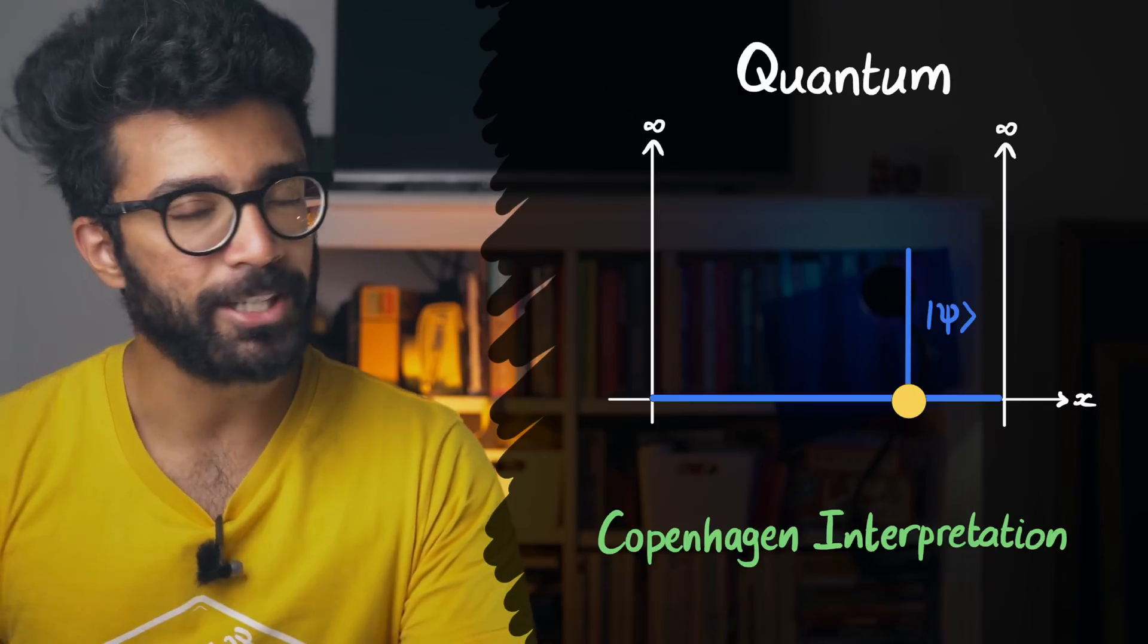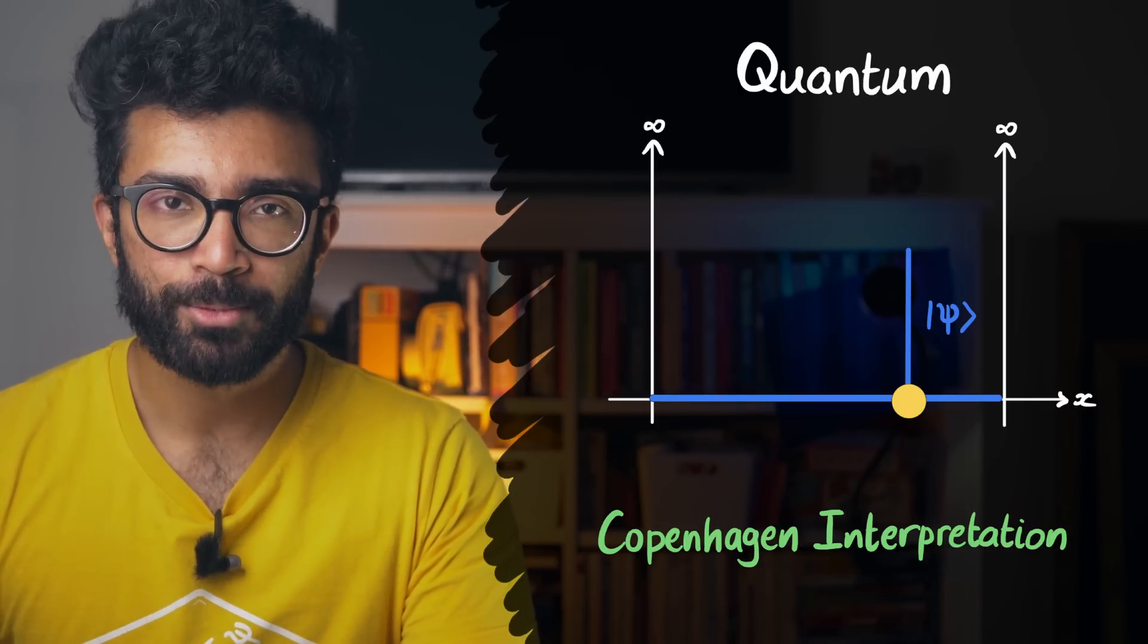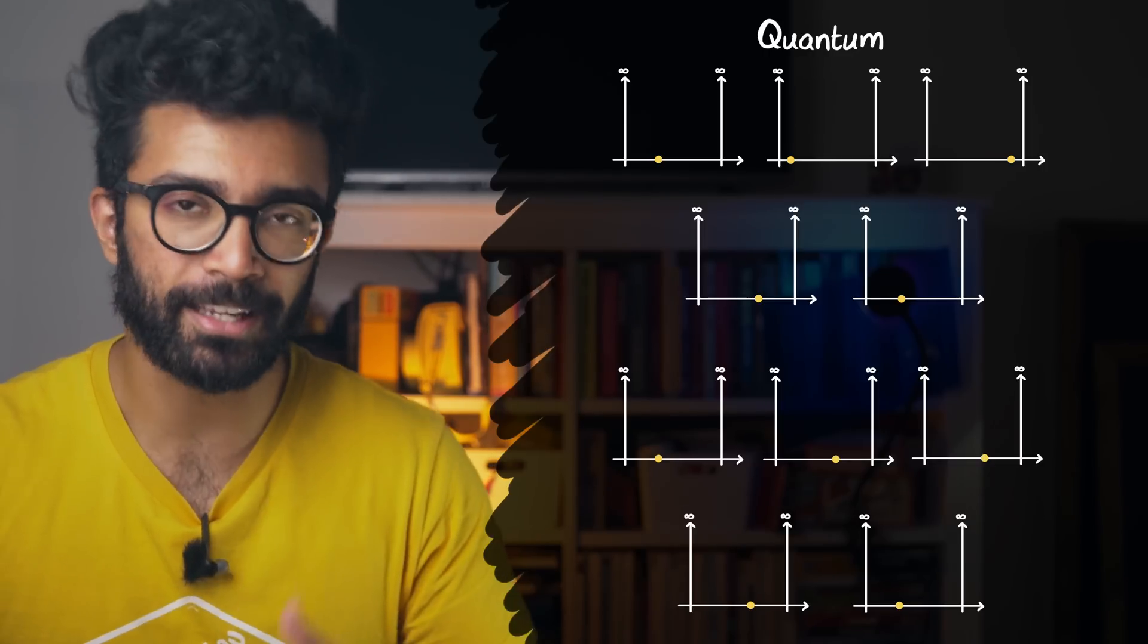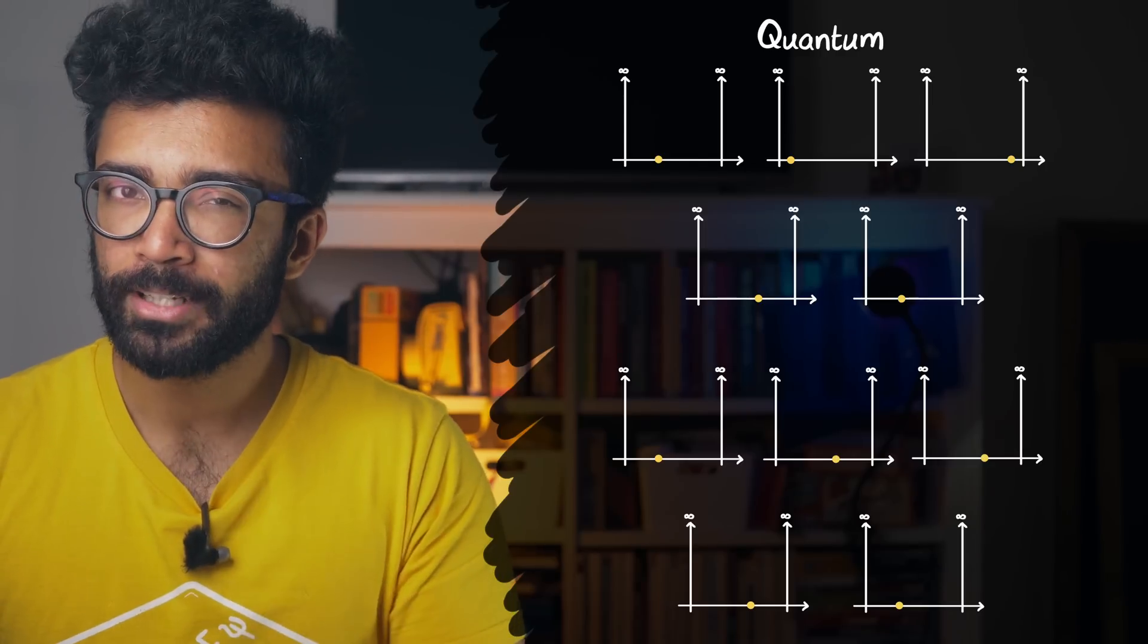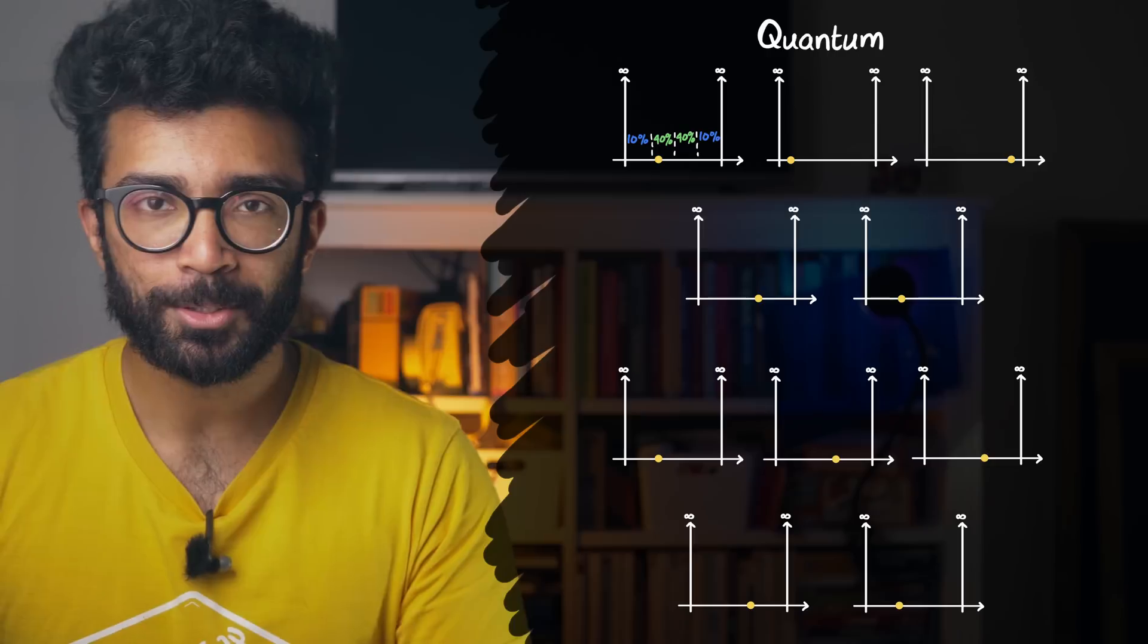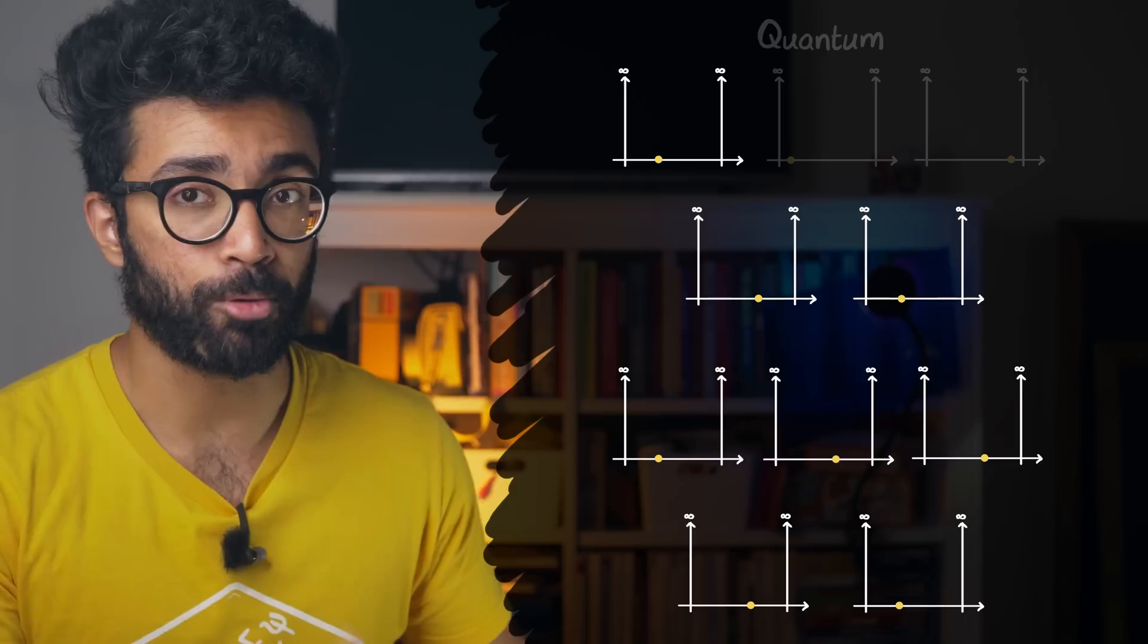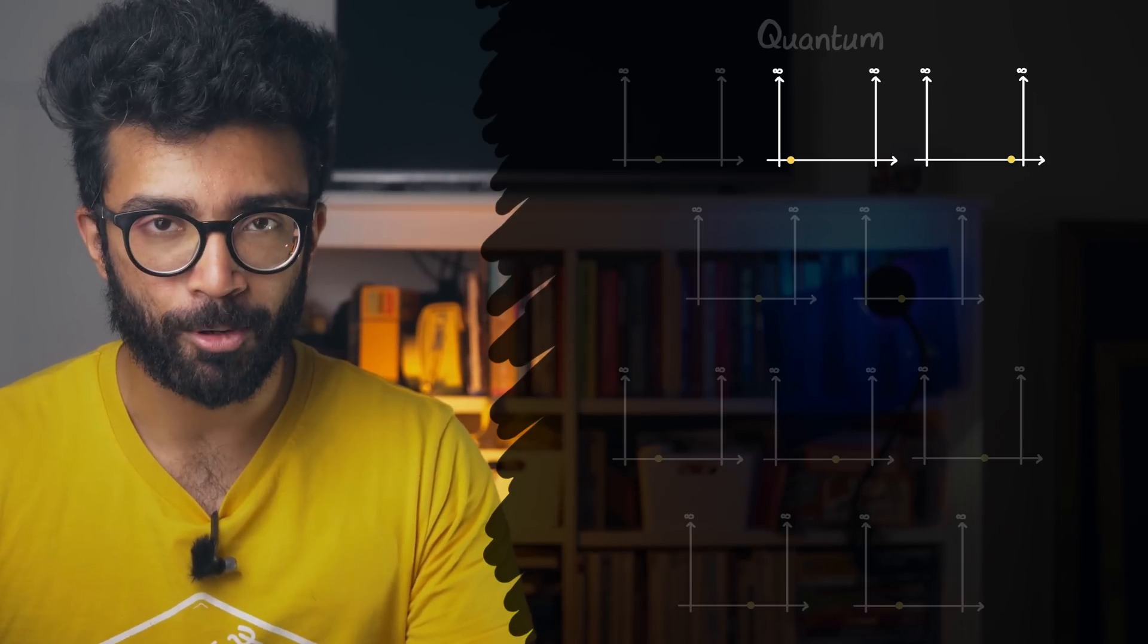But here's the important thing. When we make a measurement on multiple identical systems at the same time, with the same measurement technique, and keep everything else the same, we still get a distribution of measurement results. More particles are found in regions that had a higher probability, and fewer particles are found in regions with lower probability.